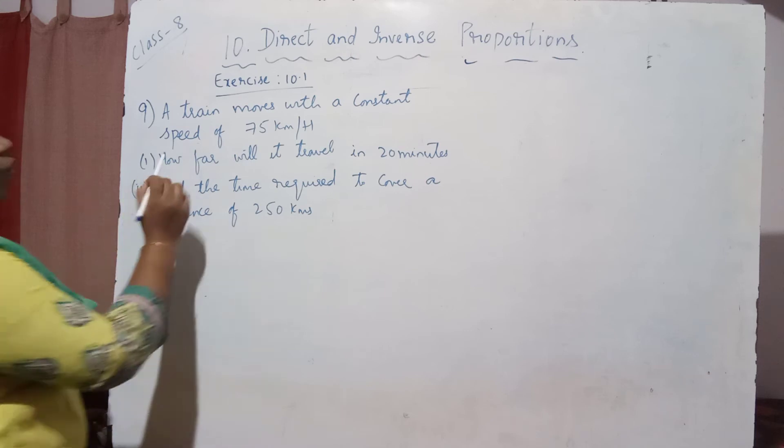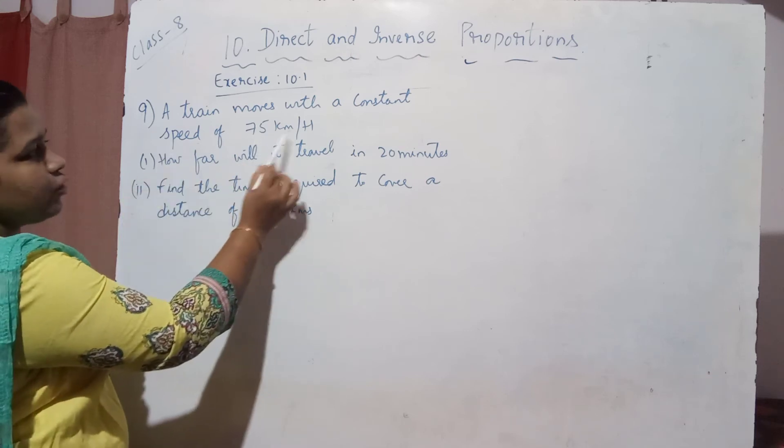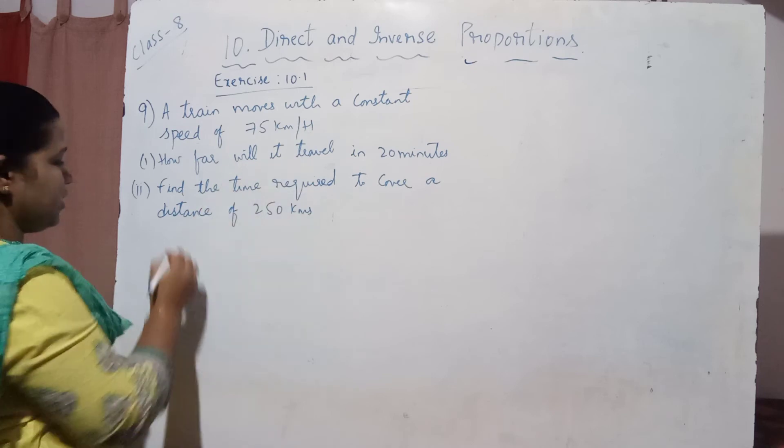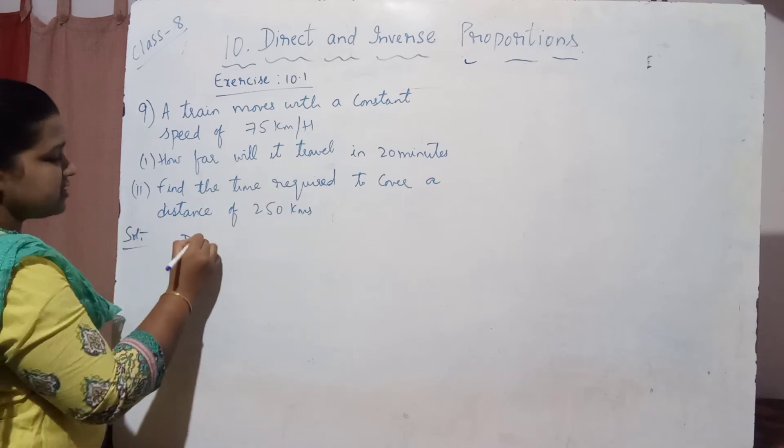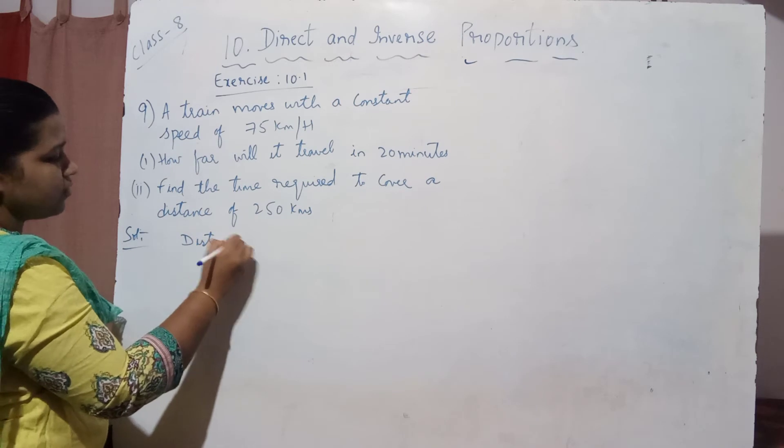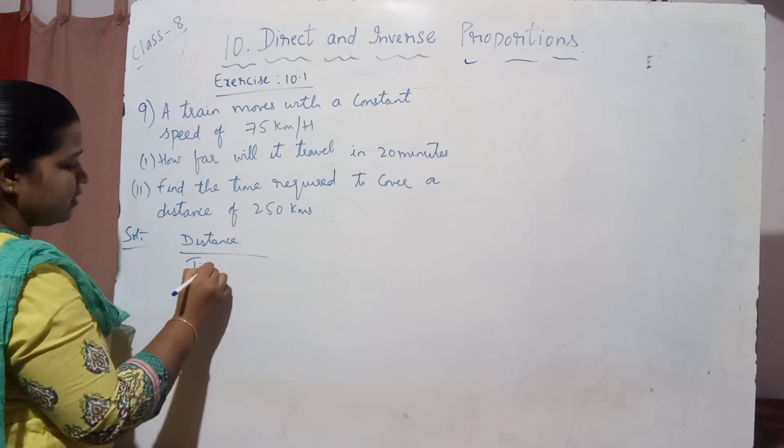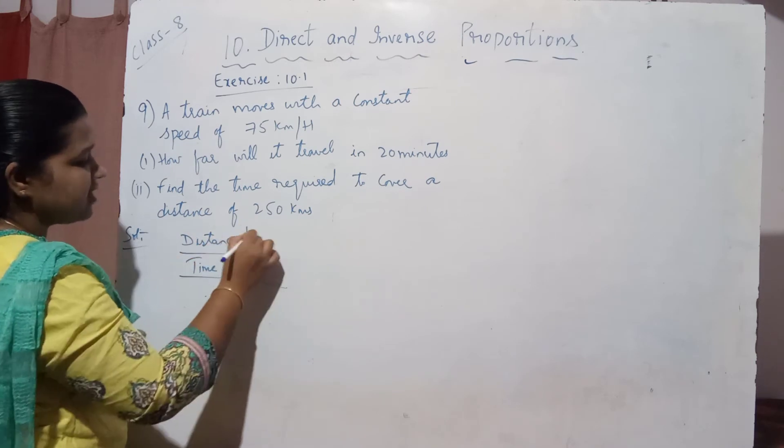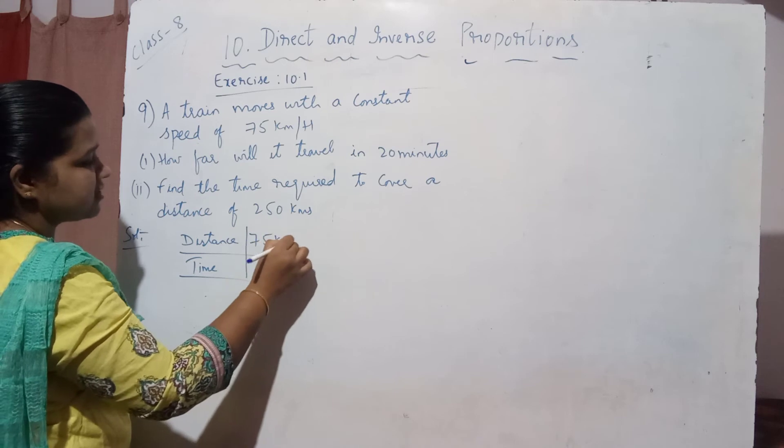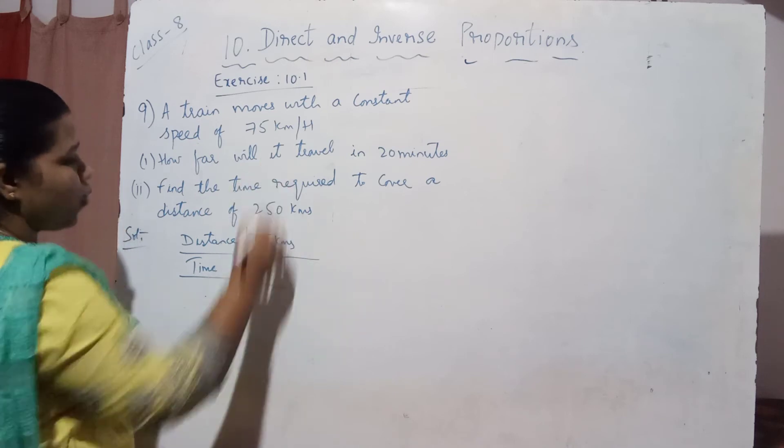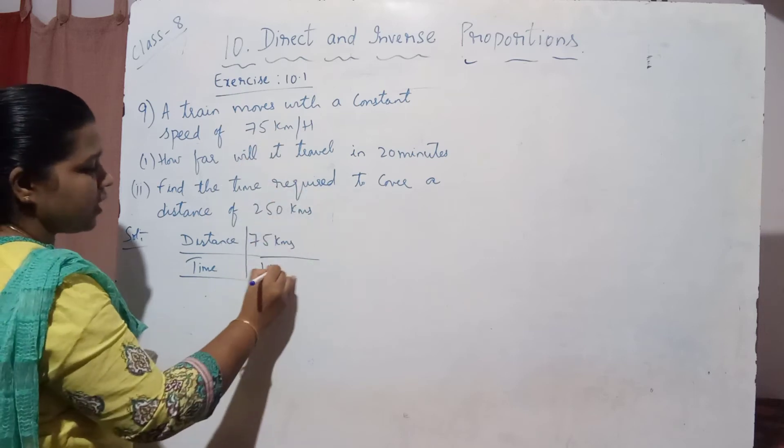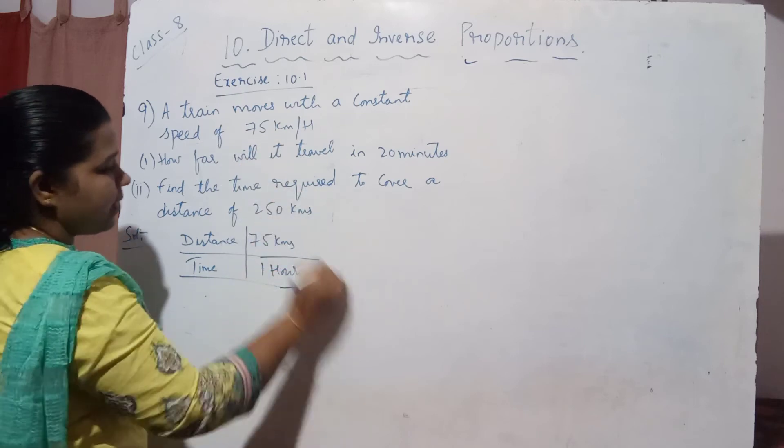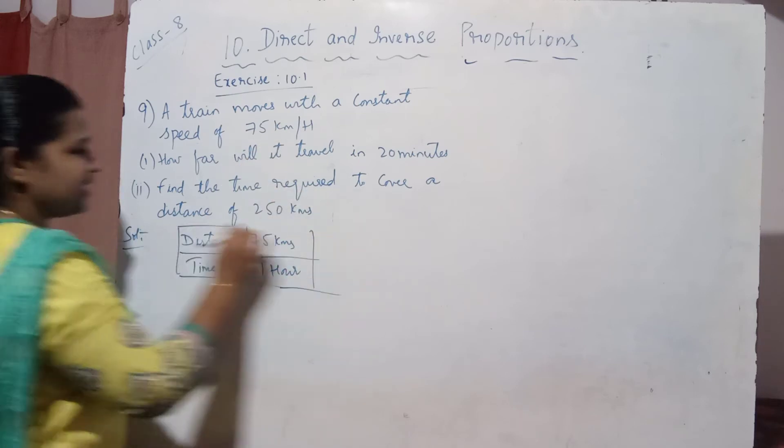What is given? 75 km per hour. Distance and time are given. Let us make a table with distance and time. How much distance can it travel? 75 km. In how much time? 1 hour. 75 km per hour. Per hour means 1 hour. There are 2 parts given under this.